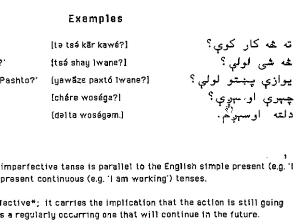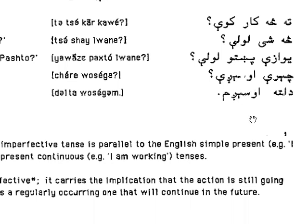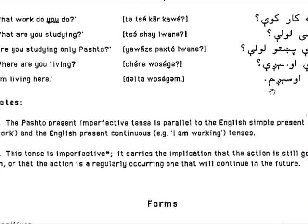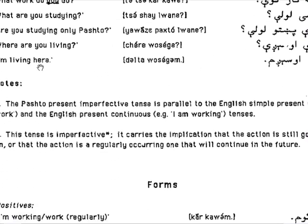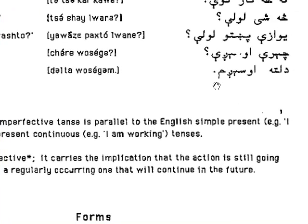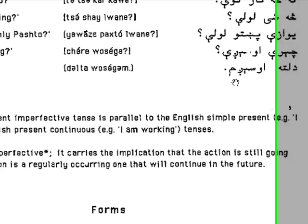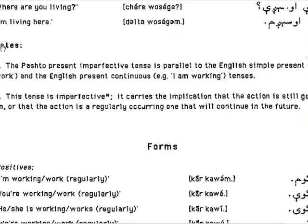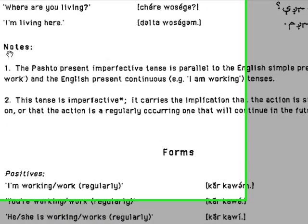In the western dialect, 'cere' becomes 'jay,' so 'cherry oh say jay.' 'Delta osegi gum' or 'osegi drum' — I am living here. 'Delta' means 'here,' 'osegi drum' or 'osegi gum' means 'I live here.' These are some notes I would like the student to review.